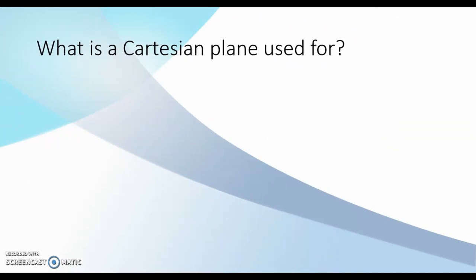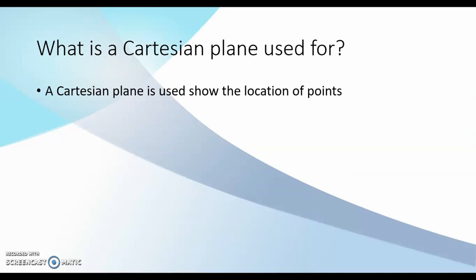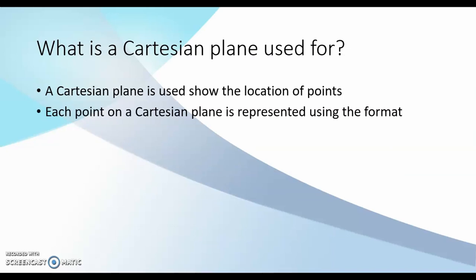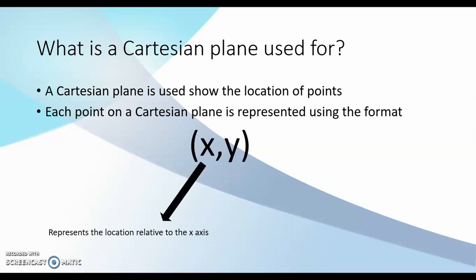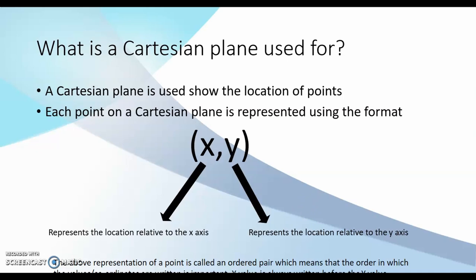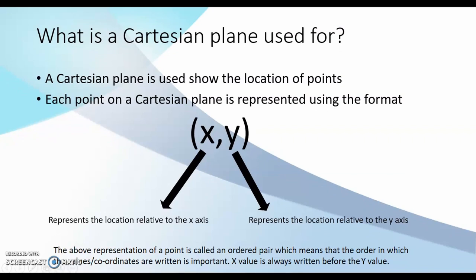What is a Cartesian plane used for? A Cartesian plane is used to show the location of points. Each point on a Cartesian plane is represented using the format (x, y), where x represents the location relative to the x-axis, and y represents the location relative to the y-axis. This representation of a point is called an ordered pair, which means that the order in which the values or coordinates are written is important. X is always written before y in our alphabet, so that should be easy to remember which coordinate appears first — our x coordinate, followed by our y coordinate.